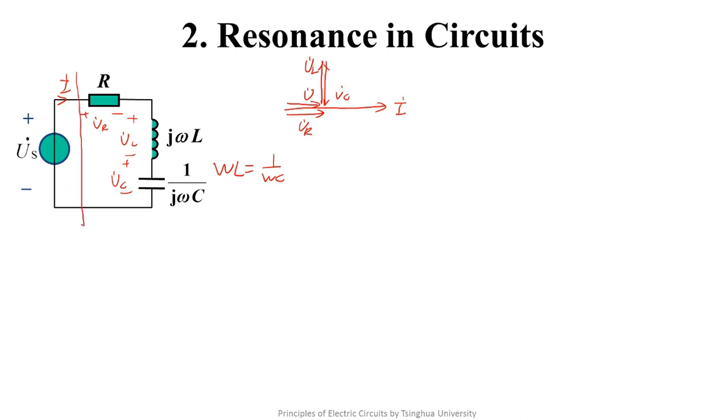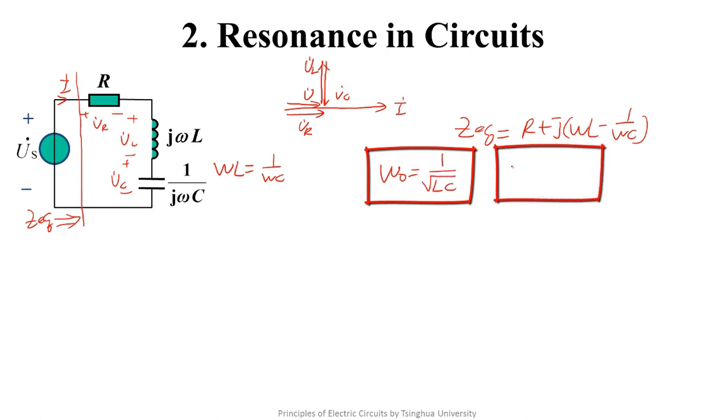We can also calculate the impedance seen from the source port to get the conclusion. Obviously, when omega L equals 1 over omega C, the input impedance represents a characteristic of a resistor. So the resonance condition of the serial RLC circuit is like this. And the input impedance of the resonant circuit is like this.